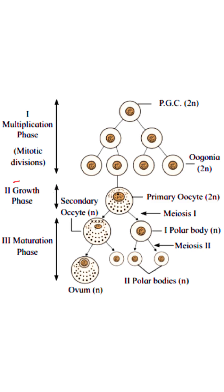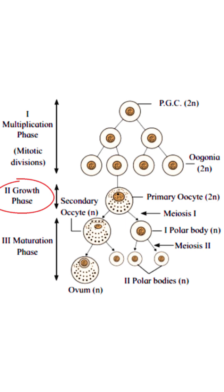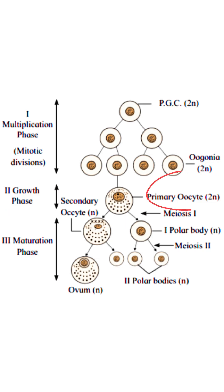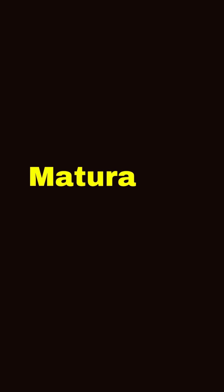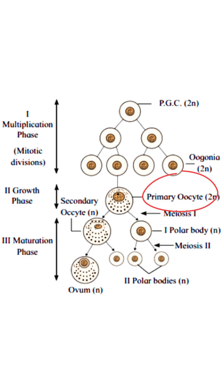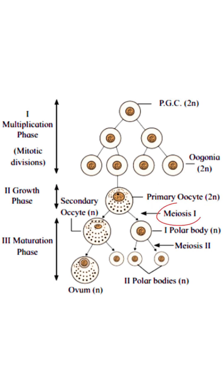The growth phase of oogenesis is of very long duration — in human females, that is 12 to 13 years. During the growth phase, one oogonium is transformed into a diploid primary oocyte. The third phase is the maturation phase, in which this diploid and fully grown primary oocyte undergoes meiosis.